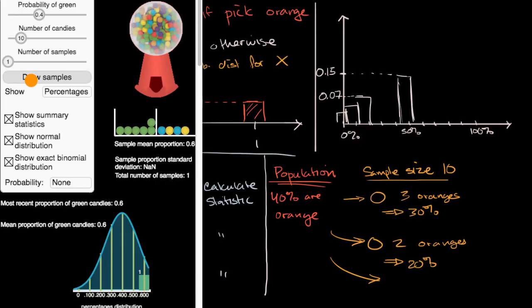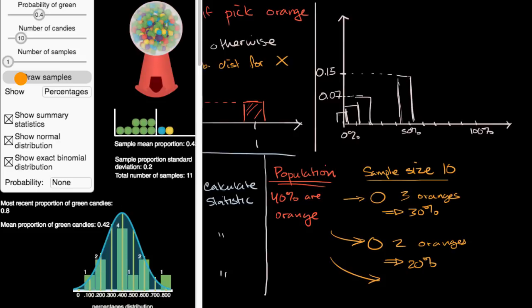But we don't wanna just do one sample. We just wanna keep drawing samples. Let's draw another sample. So in this last sample, we have 50% are green. And so now we have one was 50% green, one was 60% green. Let's draw another sample. Now we have another sample where we got 60% green. So there are two situations where we had 60% green. And so I can keep doing this over and over and over.